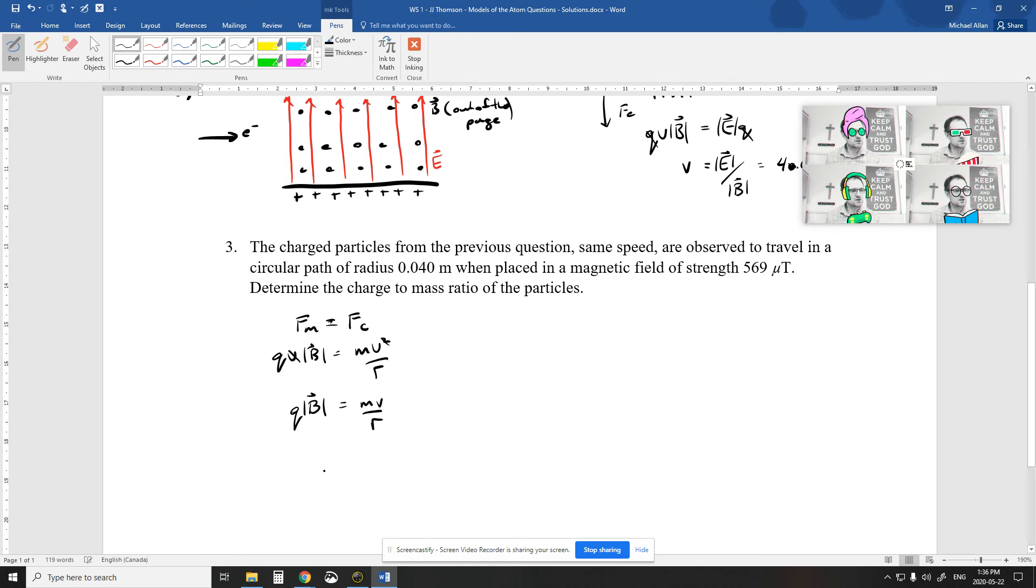Determine the charge to mass ratio of these particles. Okay. So I'm just going to rearrange this formula for charge over mass. So the charge is going to stay on this side, on the left side. I'm going to divide the B down to the other side to be beside the R there. I'm going to leave the mass, oops, sorry, divide the mass down. I'll leave the speed up on the top.